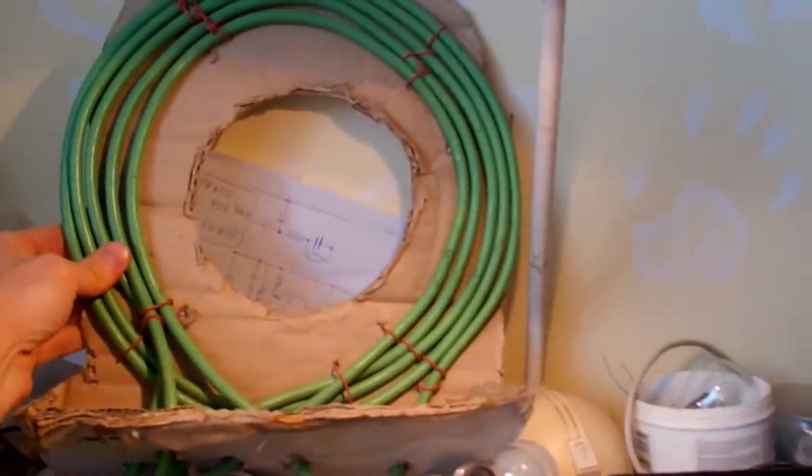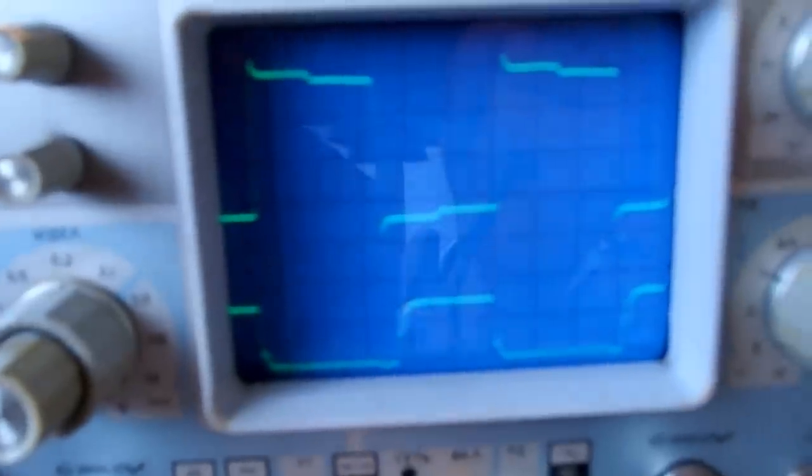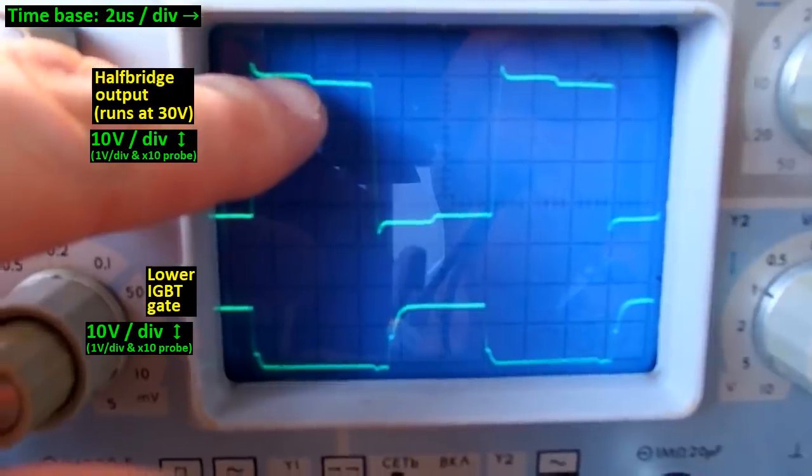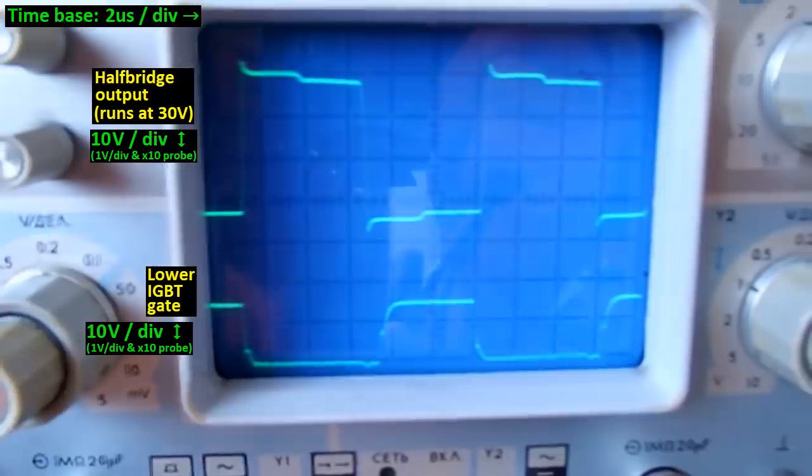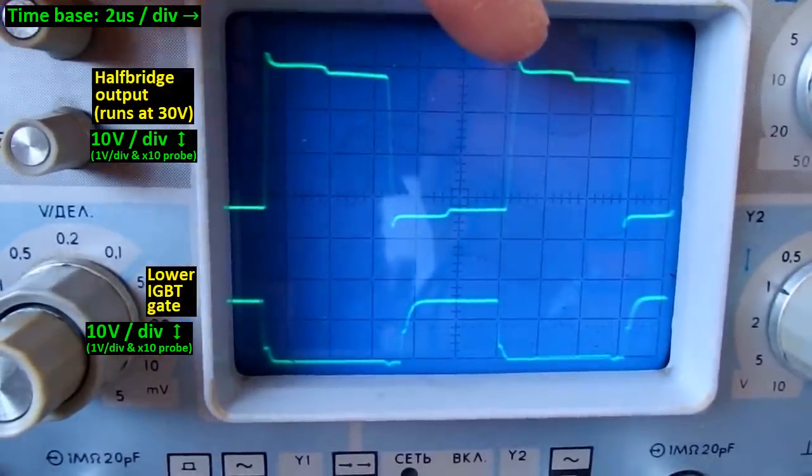And now it's loaded with this big primary, five turns. And it has a higher inductance. And the overshoots are just a small fraction of the input voltage. So it should be fine. Quite small overshoots now.